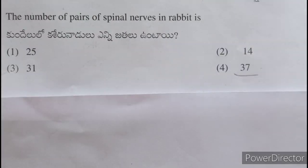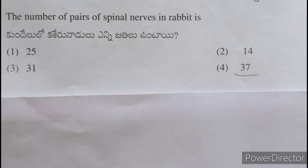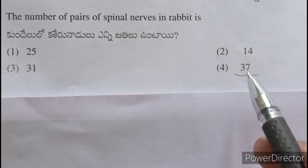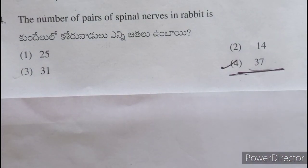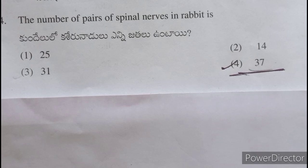The number of pairs of spinal nerves in rabbit — kundhelu lo kasheru nadi lo ennijatalu untai — is 37 pairs.